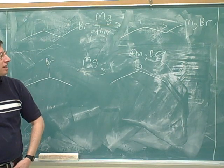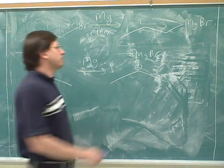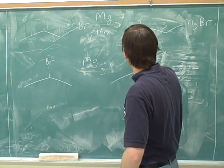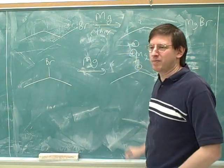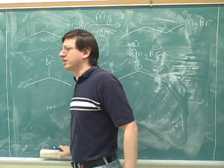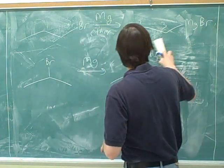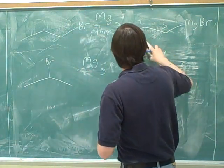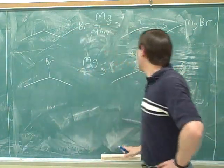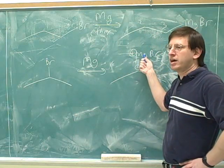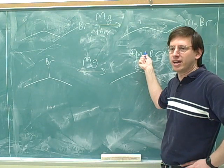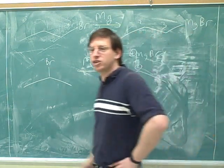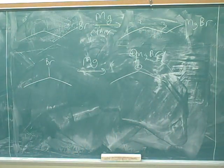In a sense the Mg-Br bond is somewhat ionic, but if you were going to put a negative charge on the bromine, you'd have to put a positive-two charge on the magnesium because you'd be showing two ionic bonds. That's just unconventional and confusing. There's no benefit to going into detail about the bond between the magnesium and the bromine - it's just a counter ion.